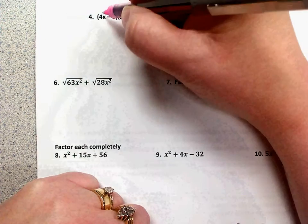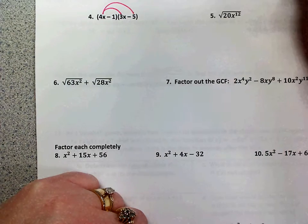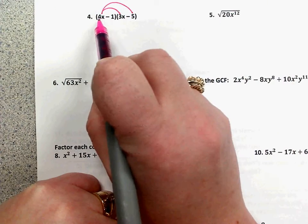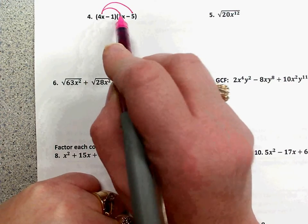So you're going to distribute. The 4x has to be multiplied by the 3x and the 4x has to be multiplied by the negative 5. Remember when you multiply, the coefficients, the numbers in front, will multiply. 4 times 3 is 12.